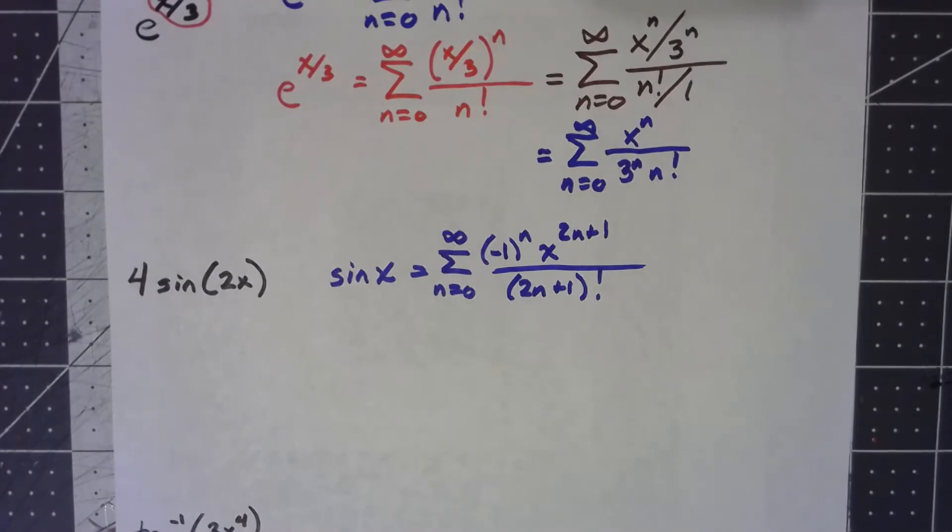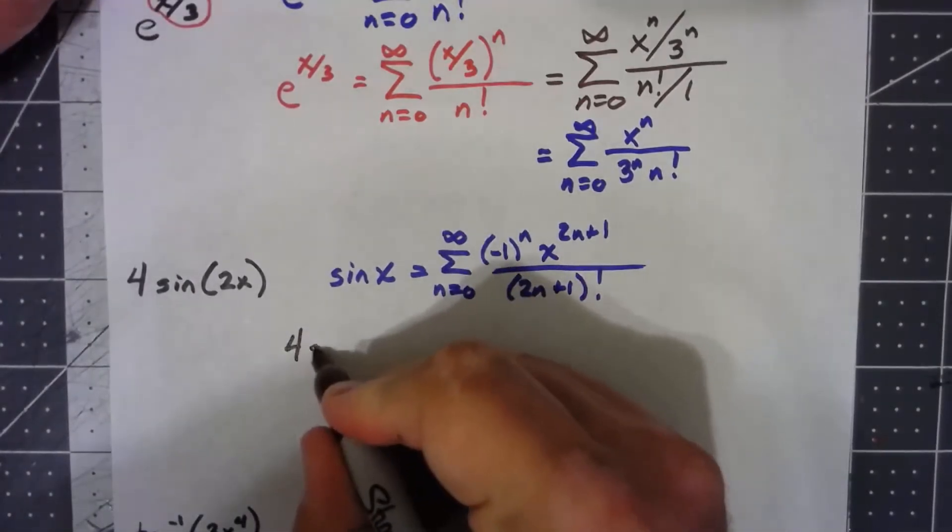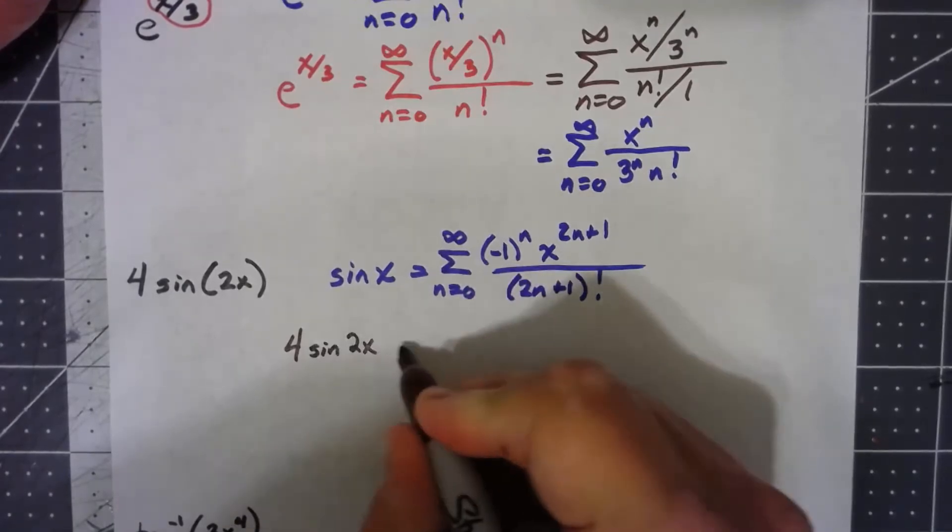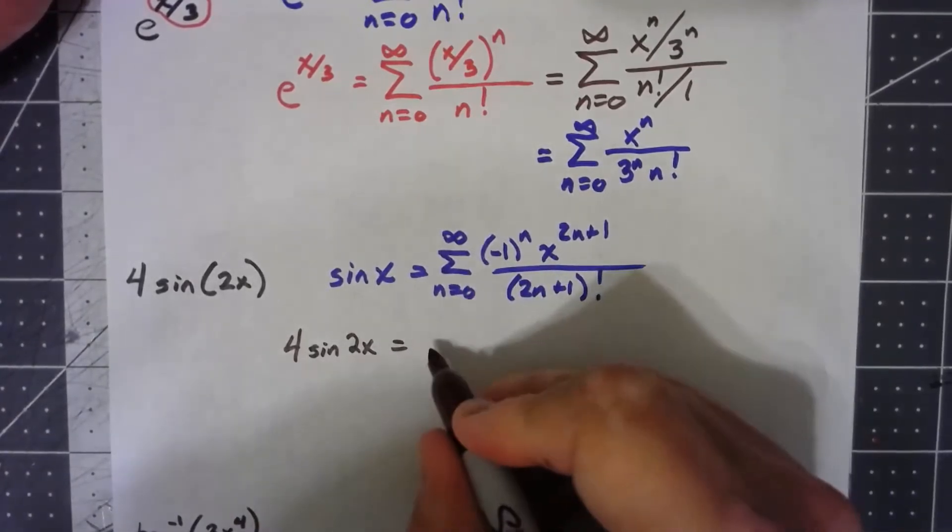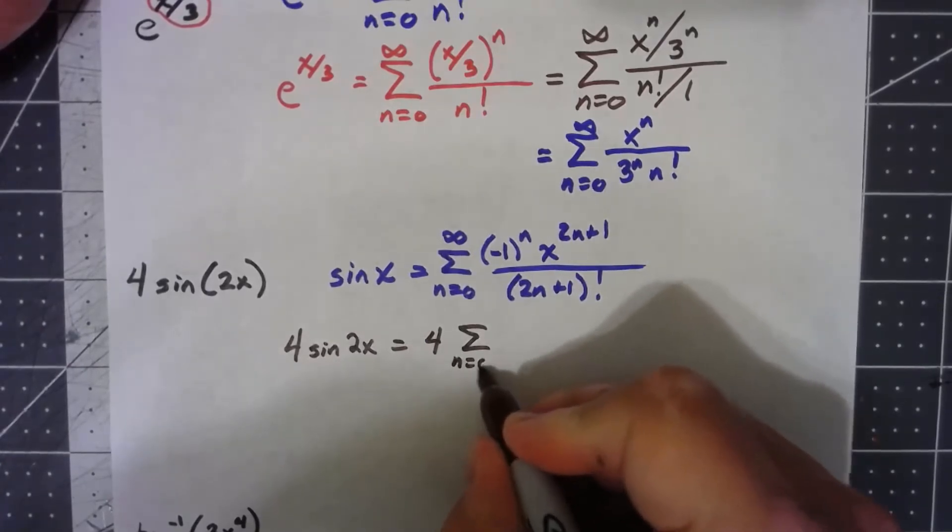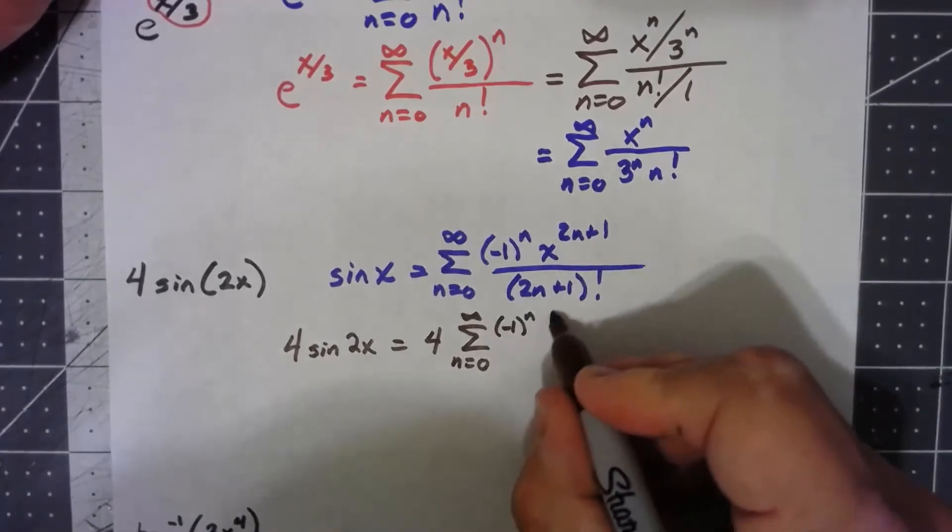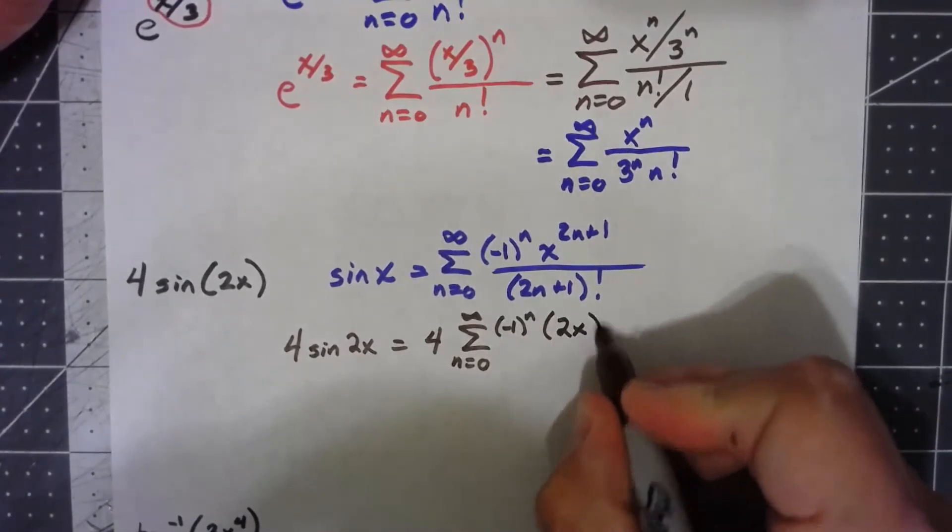So 4 sin 2x is going to be 4 times the summation, n equals 0 to infinity, negative 1 to the n. In place of the x, I'm putting a 2x.